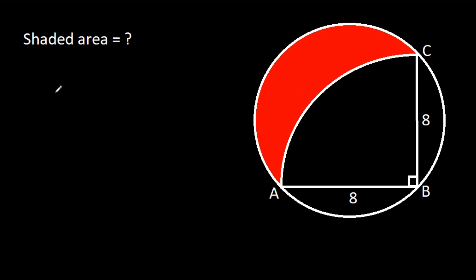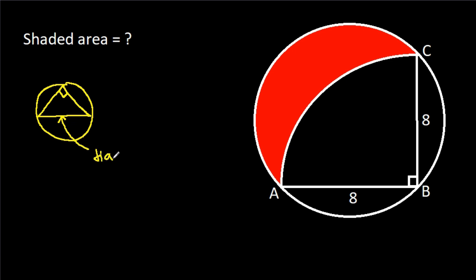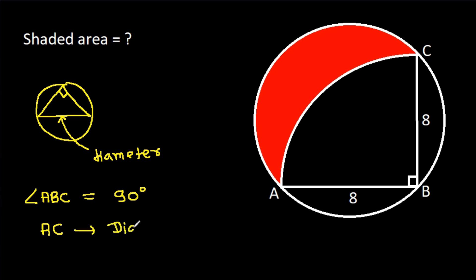We know that in any circle, the diameter makes an angle of 90 degrees on the circle. And here, angle ABC is 90 degrees. That means AC will be the diameter.